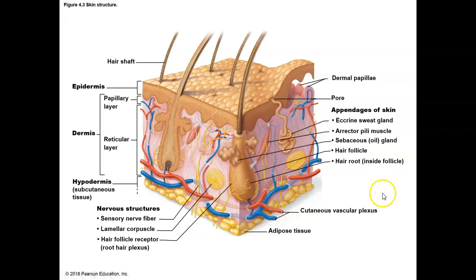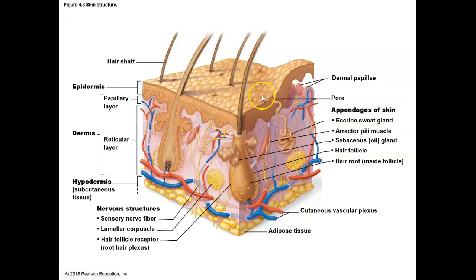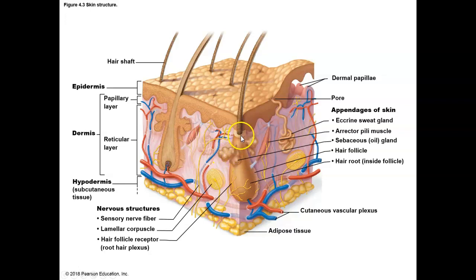Here you can see different types of sweat glands. These are called eccrine sweat glands — another name for a sweat gland is a sudoriferous gland. The eccrine ones sweat to the surface of the skin to cool us off. We also have sebaceous glands, which are located within a hair follicle. The sebaceous glands produce oils that help to waterproof the skin and keep the hair from being too brittle.